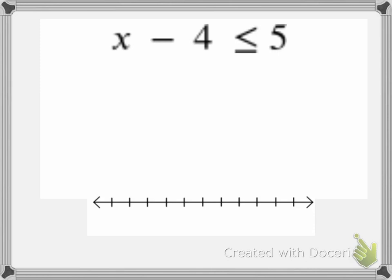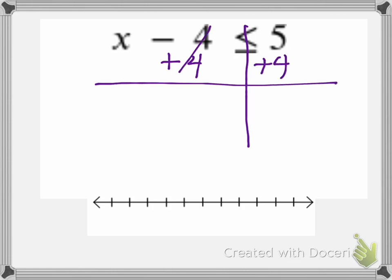Here's another inequality we want to solve. I'm going to start the same way — draw my line through my inequality sign. I notice this says x subtract 4, so the inverse operation of subtract 4 would be add 4. So I'm going to add 4 to both sides. The negative 4 and positive 4 eliminate, so that gives me x, and 5 plus 4 is 9. I keep my inequality sign, which is less than or equal to.